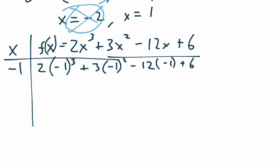So negative 1 cubed is negative 1, so that's going to be negative 2. Negative 1 squared is positive, so plus 3. Negative 12 times negative 1 is positive 12 and then a plus 6. So here when we combine these, negative 2 plus 3 is just a plus 1. 1 plus 12 is 13, plus 6 is 19. So we're going to write that over here, 19.